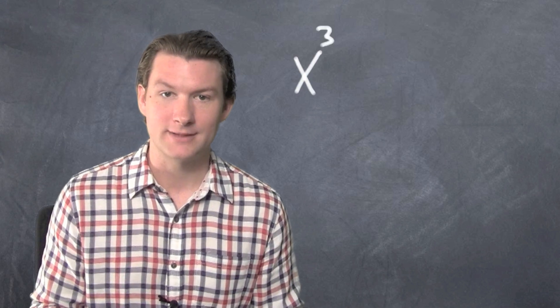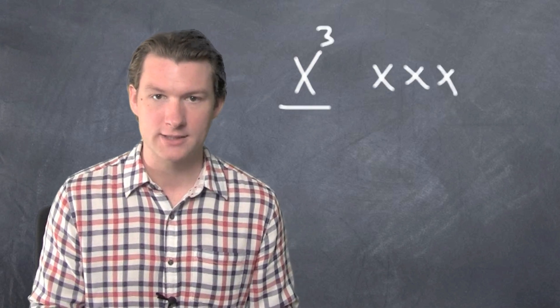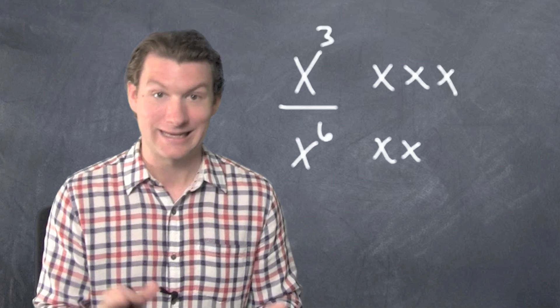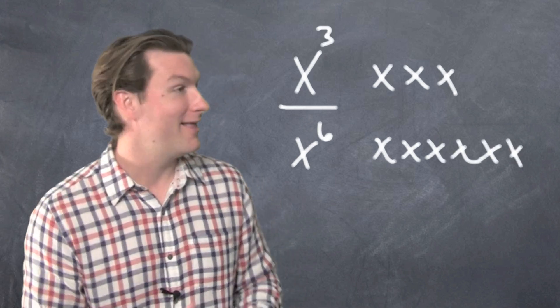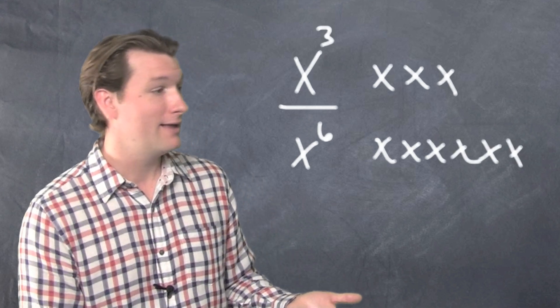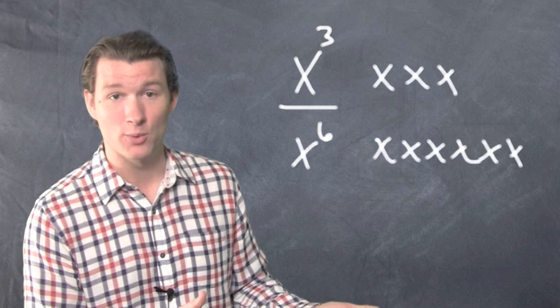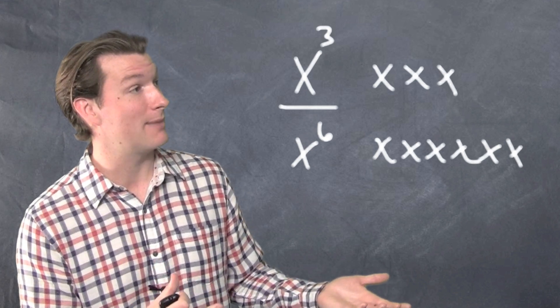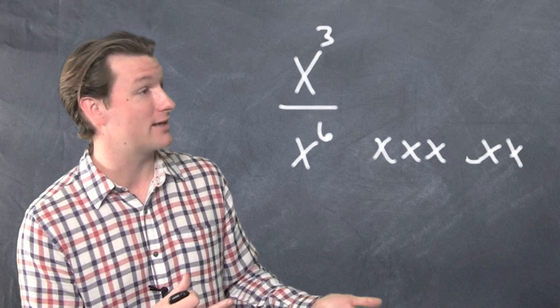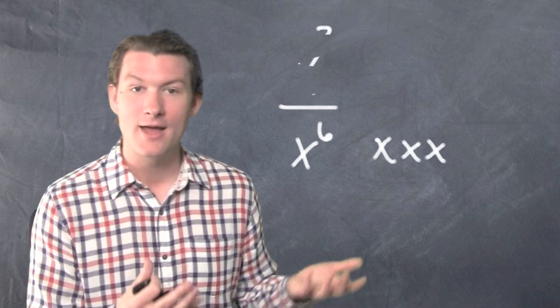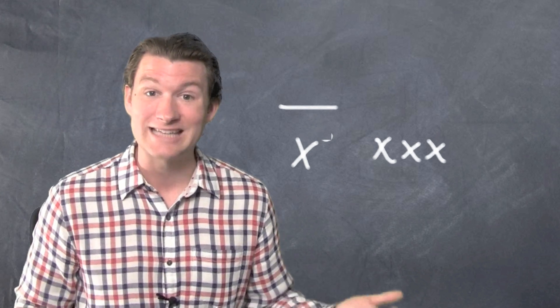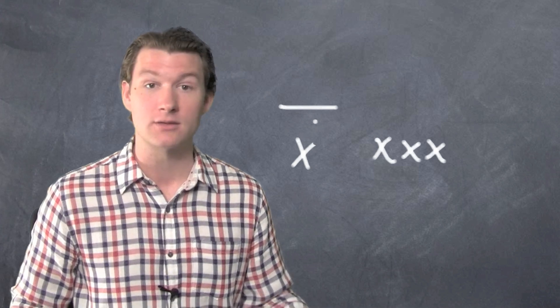x³, that's x times x times x, over x⁶. That's x, x, x, x, x, x. Remember there's a battle going on here. Who's going to win? Oh man, the guys on the bottom are totally going to win. There's six of them versus three on top. The three guys on top are going to take out three of the guys on the bottom, but we're still going to have three x's on the bottom. That's x times x times x. That's x³.